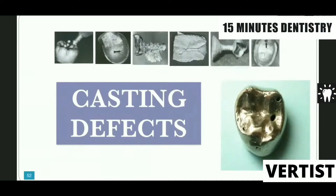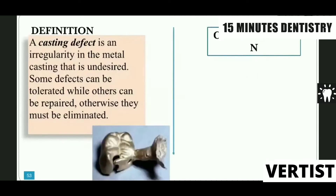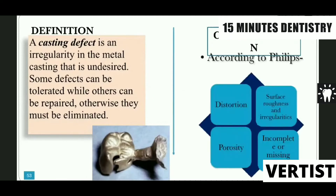We finish with the casting procedures. Now, casting defects — a casting defect is usually an irregularity in the metal casting that is undesired. Some defects can be tolerated while others can be repaired and cannot be eliminated. As far as possible, if the castings are defective, we are not going to place those into the oral cavity, but there are some things which can be rectified also.